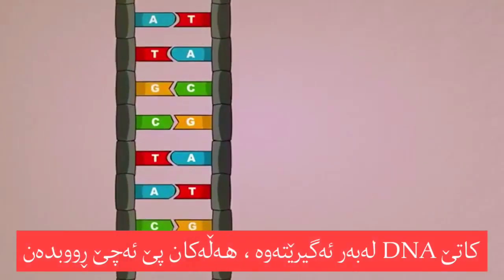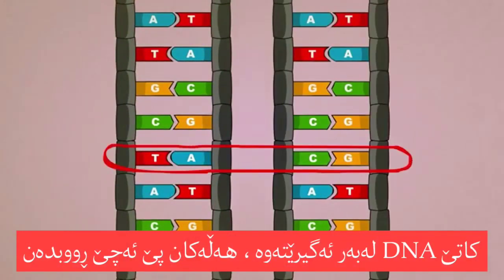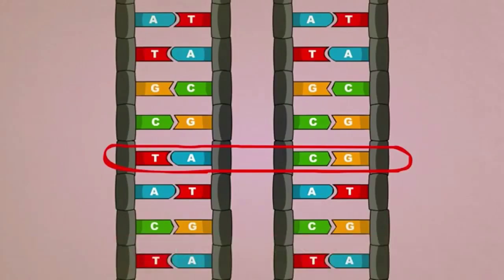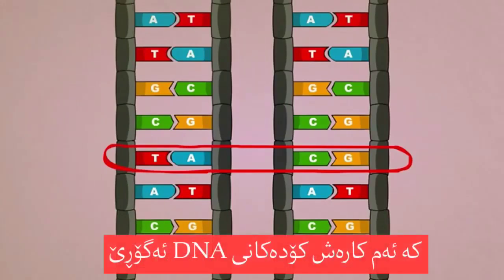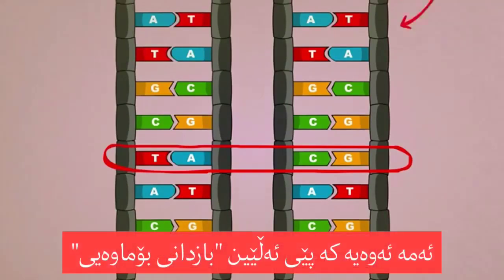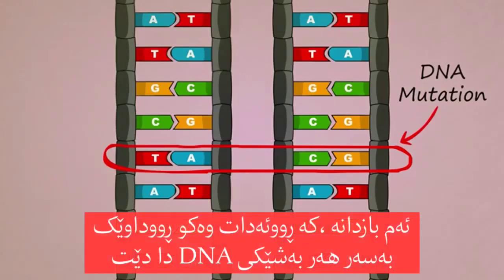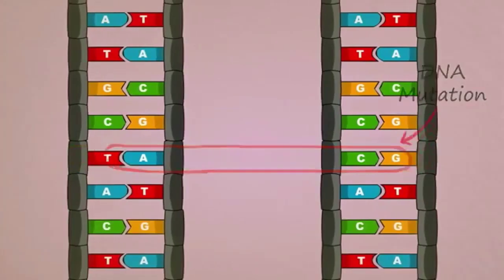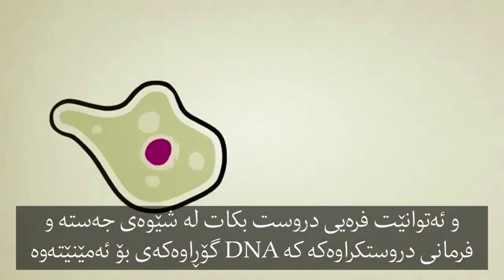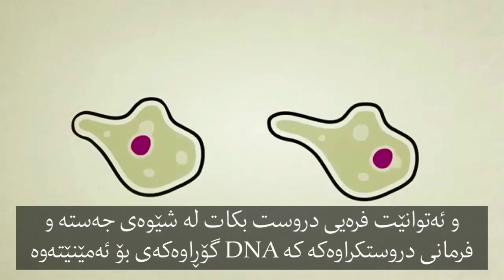When DNA is being copied, errors can occur which modify the DNA code. This is what we call a DNA mutation. These mutations, which happen completely on accident and randomly to any part of a DNA strand, can produce variation in the body shape and function of the creature who inherits the modified DNA.